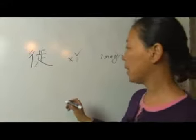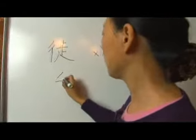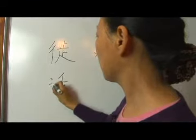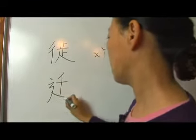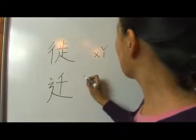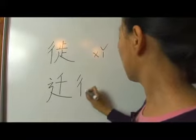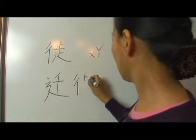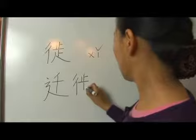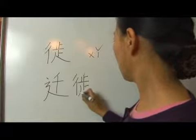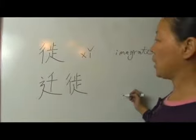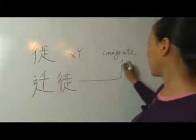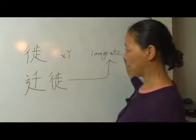We often say qián xǐ. qián xǐ is one word, and it exactly means emigrate.